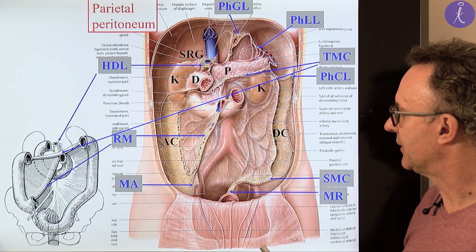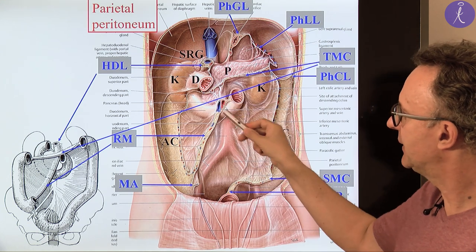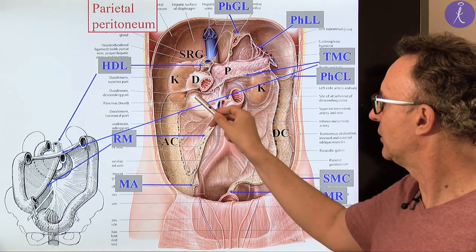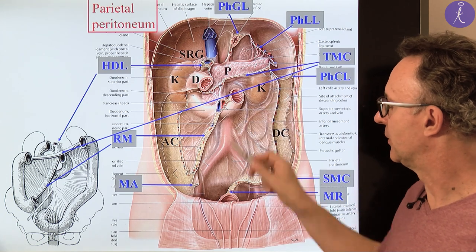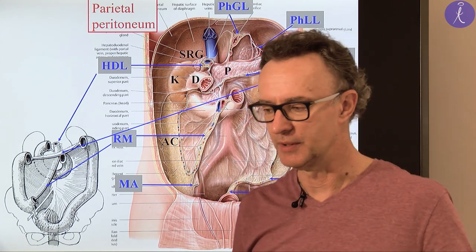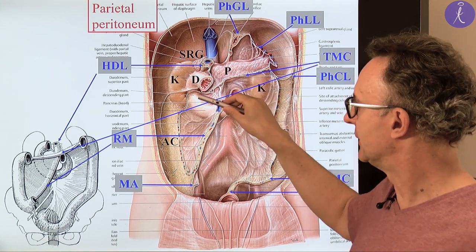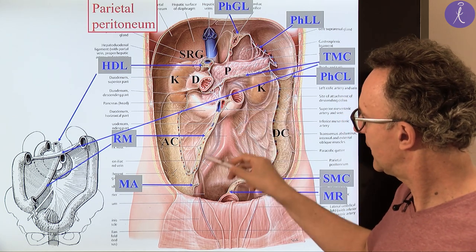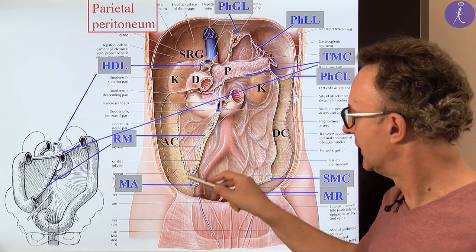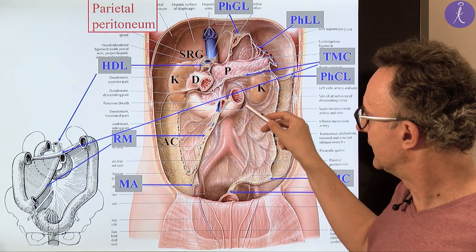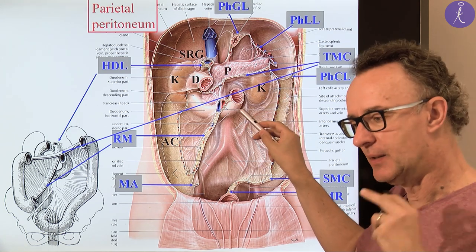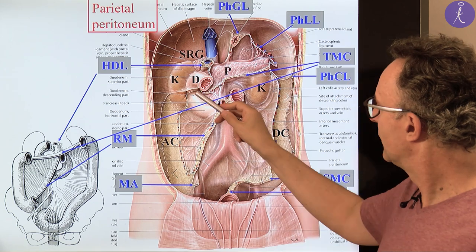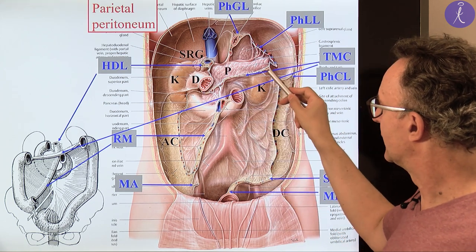Going back to this, we understand why the duodenum is now retroperitoneal — at least from the distal part of the descending duodenum. The first part, the superior horizontal part, until the level of the liver bud, is still intraperitoneal — that's why we have the hepatoduodenal ligament. The rest of the small intestine — the jejunal and ileal loops — are all intraperitoneal. Here you see the line of the transverse mesocolon.